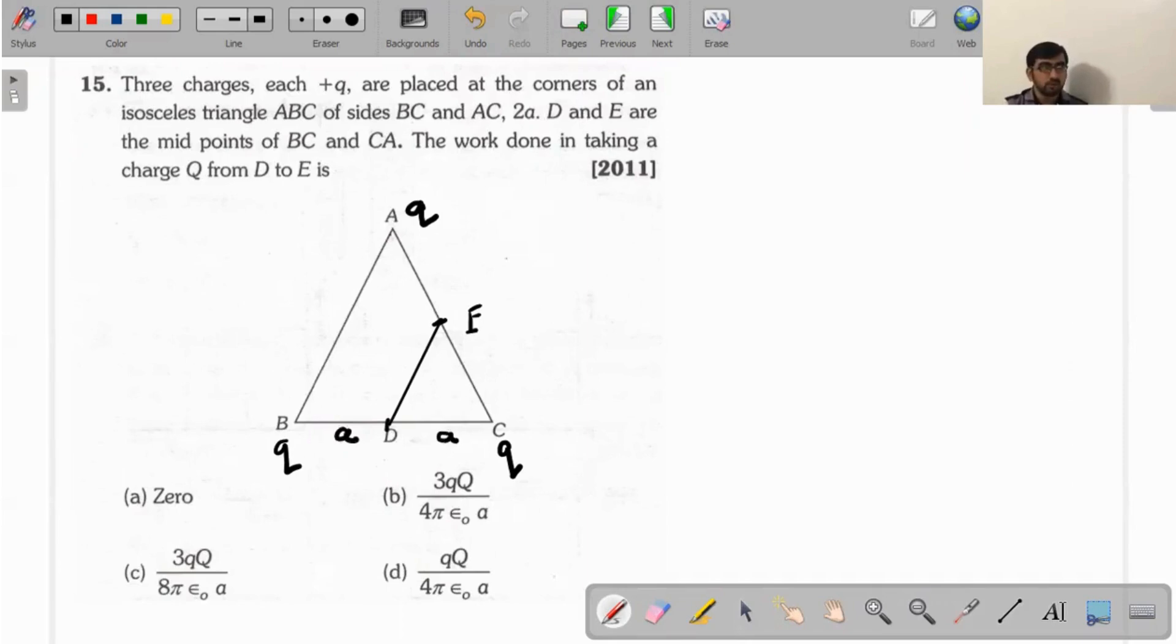Let's say some distance. At point E, there are three charges +Q at each vertex. Since E is on the perpendicular bisector, this distance is also the same. Potential at D will be due to charges at A, B, and C. Potential at E will be due to A, B, and C. In both cases the charges are the same and the distances are equal.